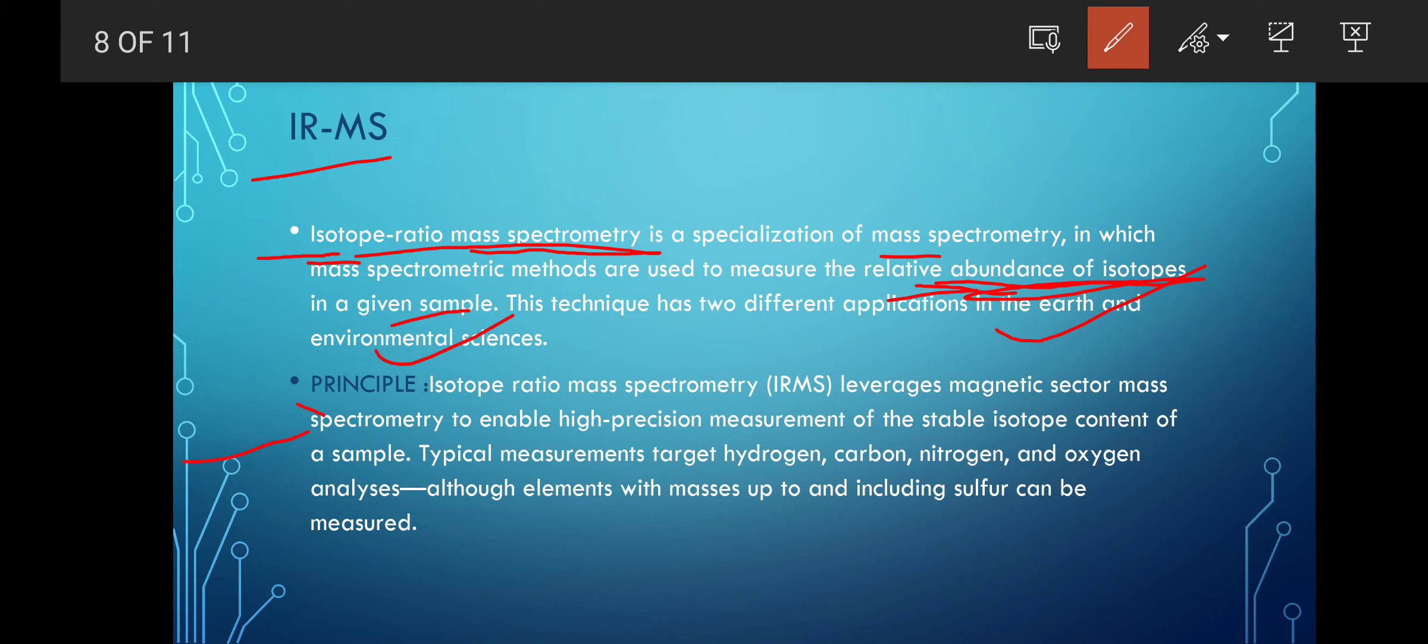The principle is that isotope ratio mass spectrometry leverages magnetic sector mass spectrometry. It uses the magnetic sector to enable highly precise measurements of the stable isotope content of the sample. They are measuring in high precision. They measure different types of elements, especially hydrogen, carbon, nitrogen, oxygen and sometimes also sulfur, accurately determining how much quantity is present.